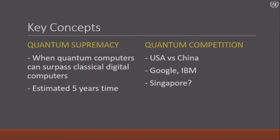Quantum supremacy is a great topic. It is not what you saw in Avengers — they don't use it to travel through time. It's simply when quantum computers can surpass classical digital computers. Right now, IBM makes a quantum computer available on the cloud so that all of you can also use a quantum computer.